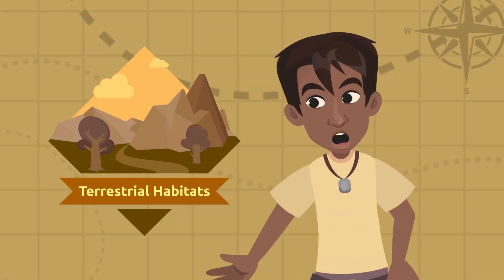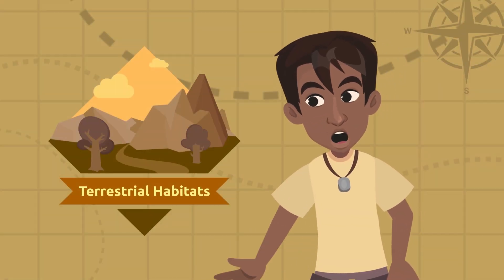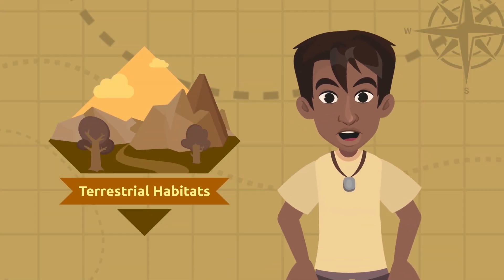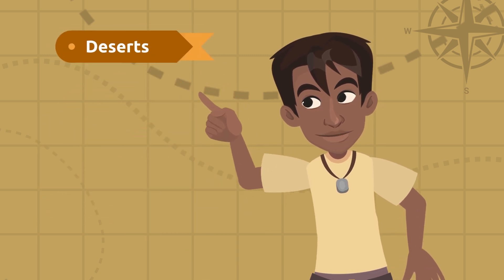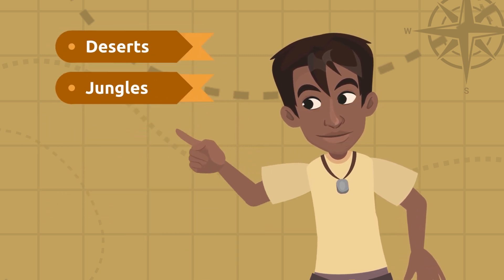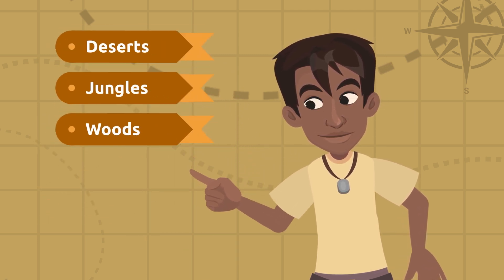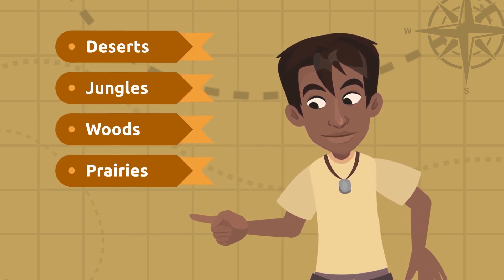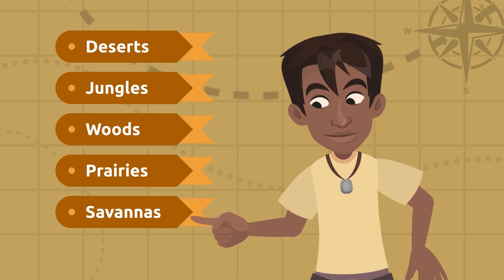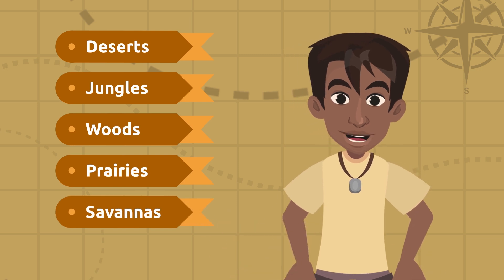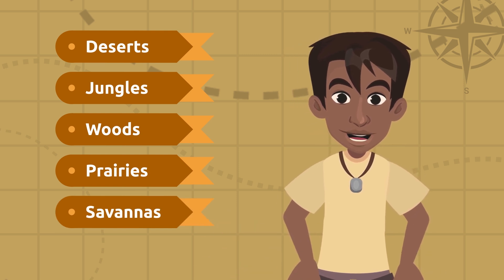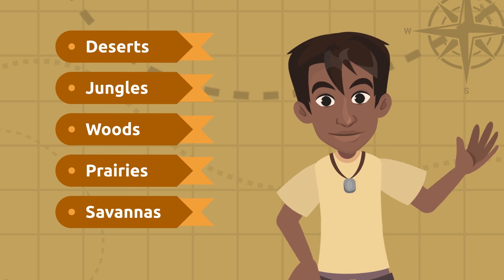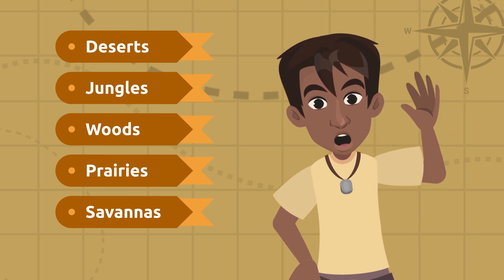Today we have seen the terrestrial habitats, among which we find deserts, jungles, woods, prairies, and savannahs. But we still have aquatic habitats left to visit — don't miss the next video! See you soon.